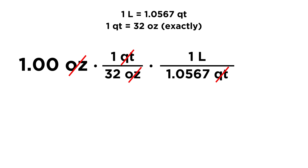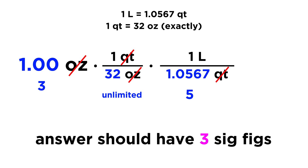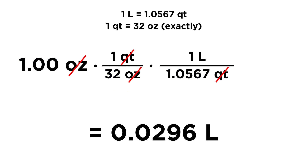If we set things up this way and end up with the units we want, we know we did the problem correctly. Now for sig figs: we have three sig figs in 1.00 — those trailing zeros are significant because they are decimal zeros. The 32 is unlimited since it is an exact conversion — precisely 32.000 with infinite zeros — so it will not limit our sig figs. We have five sig figs in 1.0567, so our answer must have three sig figs. Plugging into the calculator, we get 0.0296 liters.